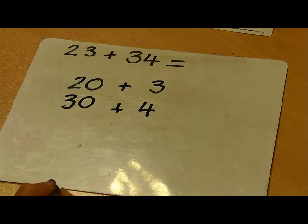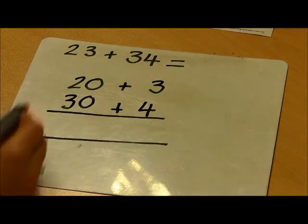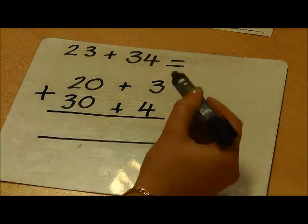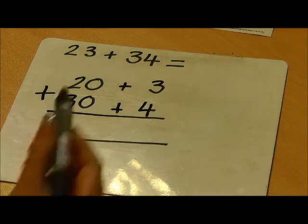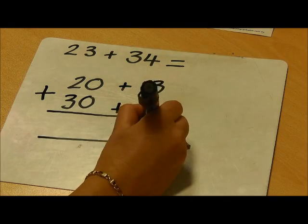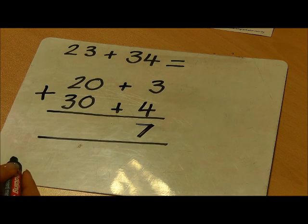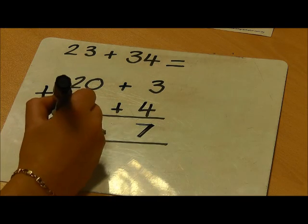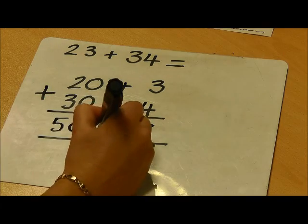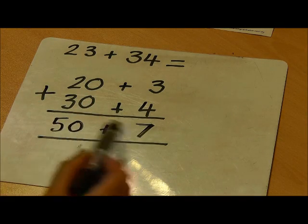I'm going to add these together as tens and units. For the units, I have 3 units and 4 units, which is 7. And for my tens, I have 20 add 30, which is 50. My answer is therefore 57.